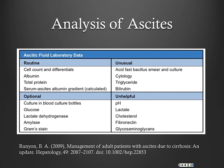Now that you've done your paracentesis and aspirated some fluid, you want to send it for appropriate studies. Routine things we always check are cell count with differential, albumin, and total protein — because we want to calculate a SAAG, the serum ascites albumin gradient. We're also going to do cultures, and the important thing is to inoculate your cultures at bedside.